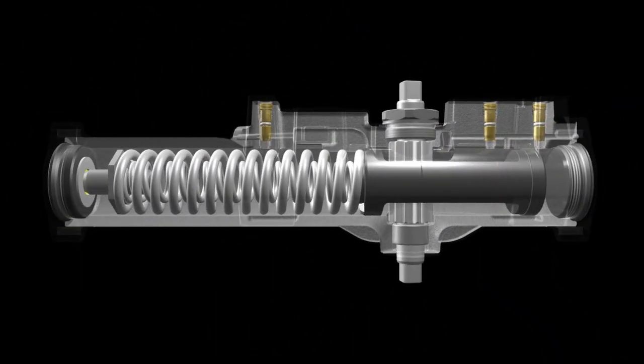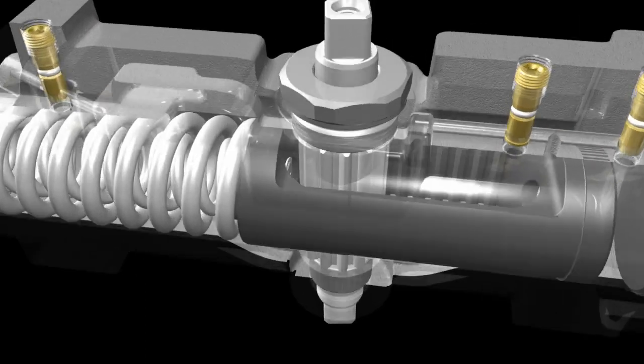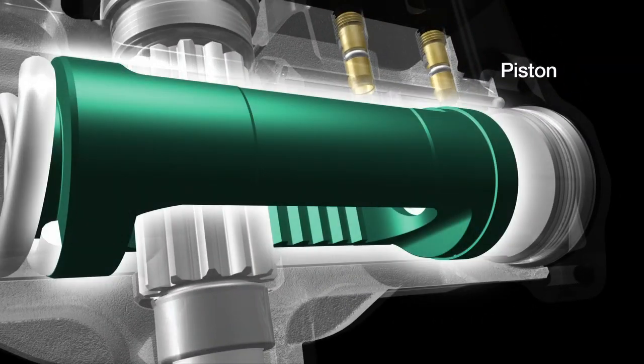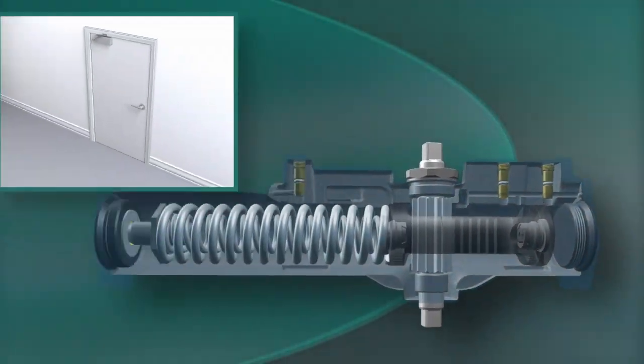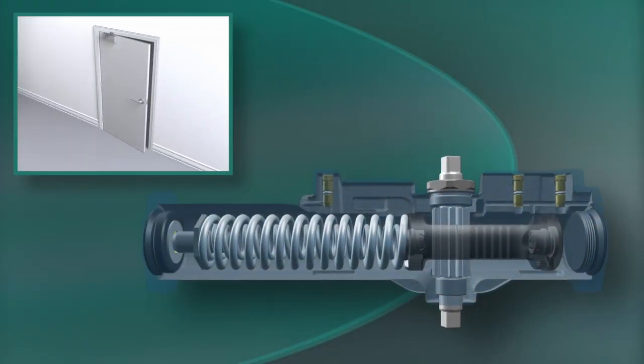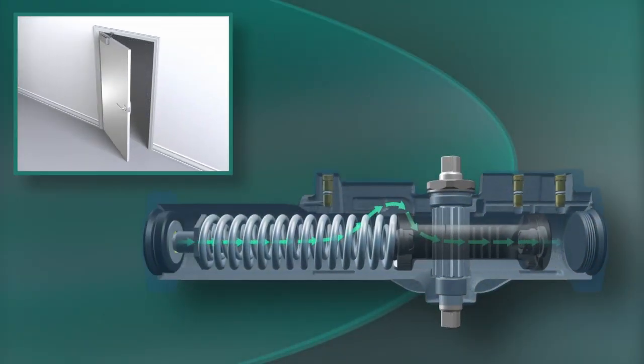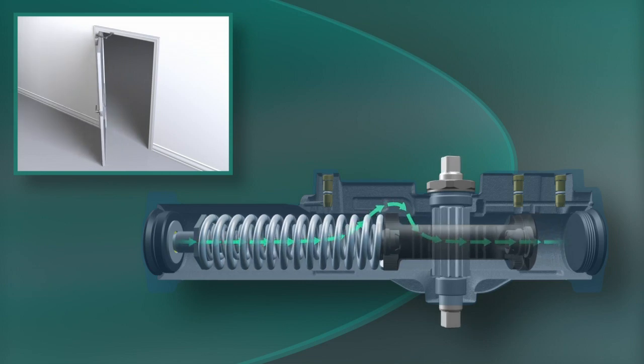Here's the basics. Each time the door is opened, the closer arm turns a pinion, which moves a piston inside the fluid-filled chamber. The speed of the piston is controlled by fluid passing from one side of the closer to the other. The valve controls the speed.